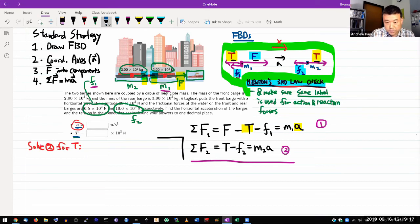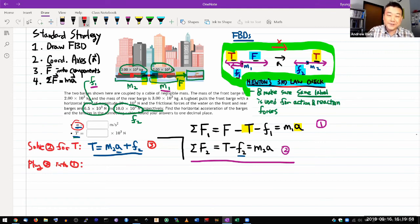Then, oh, I just need to move the friction term over. So I get tension is equal to M2 A plus F2. All right. Now note how I have an unknown acceleration on the right hand side. So I can't actually plug in the numbers and get a value for tension. So that's not why I solve for tension.